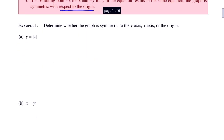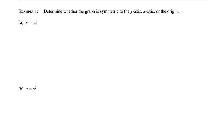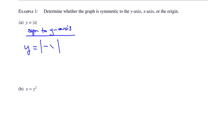Let's look at example one. Determine whether the graph of y equals the absolute value of x is symmetric to the y-axis, x-axis, or origin. To test for symmetry to the y-axis, substitute negative x for x: the absolute value of negative x. Recall that absolute value always makes the inside positive, so the absolute value of negative x equals the absolute value of x. Since we get the original equation back, the graph is symmetric to the y-axis.